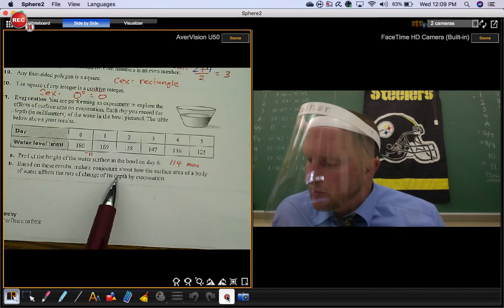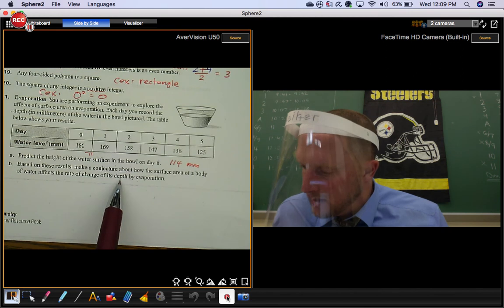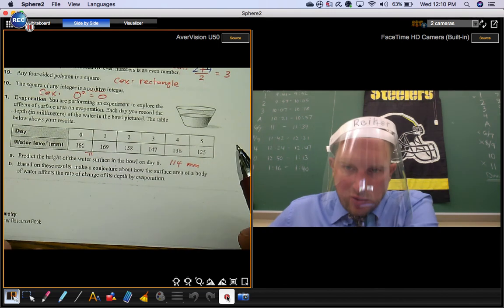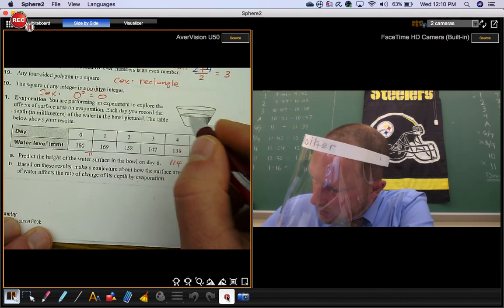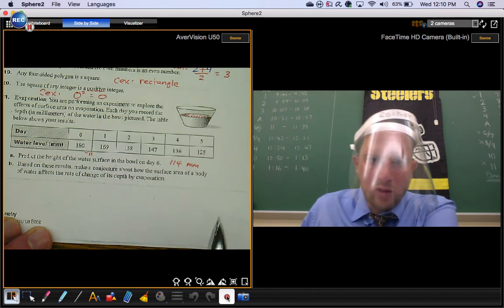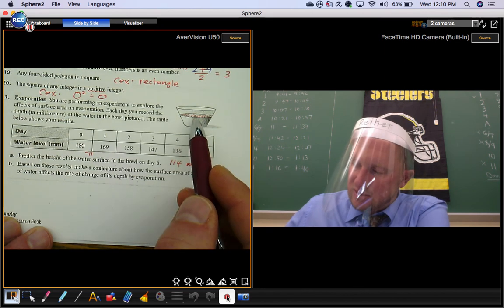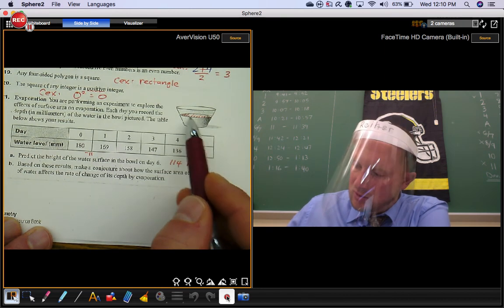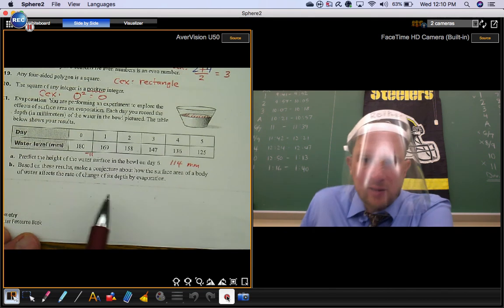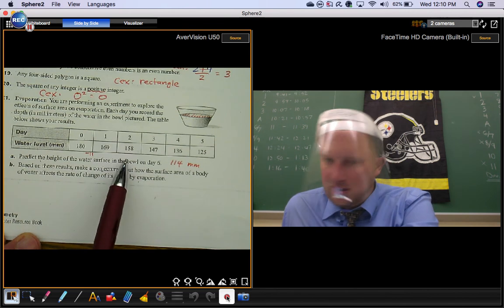Based on these results, make a conjecture about how the surface area of a body of water affects the rate of change of its depth by evaporation. So I'm not totally sure if they meant to make this this complicated, but the surface area of that body of water is that circular region there. And obviously, as this water level drops, the surface area of this circle decreases as well. So anything about that would be fine. As the surface area gets smaller, the depth decreases as well.